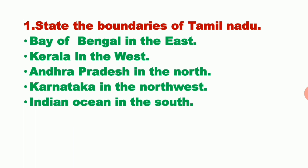First question: State the boundaries of Tamil Nadu. Tamil Nadu looks like a triangular shape. It has five boundaries: Bay of Bengal in the East, Kerala in the West, Andhra Pradesh in the North, Karnataka in the North West, and Indian Ocean in the South.